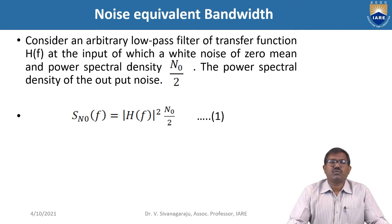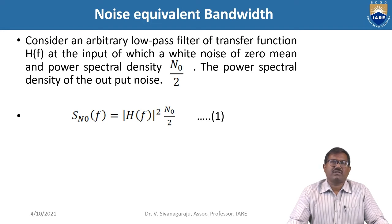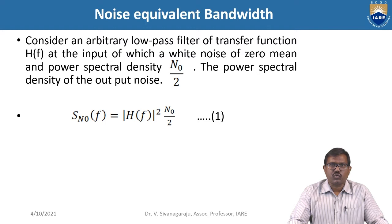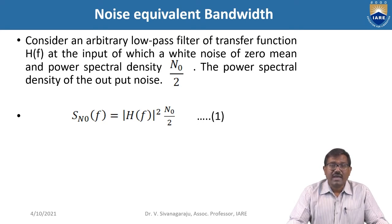Now we are going to calculate BN, the noise equivalent bandwidth. For this we are considering an arbitrary low pass filter of transfer function H of f, at the input of which white noise of power spectral density N0 by 2 is applied. So S_n0 of f, which is equal to mod square of H of f into N0 by 2 — that is equation 1.